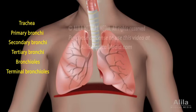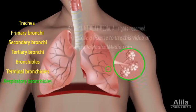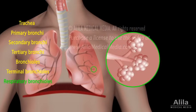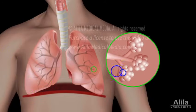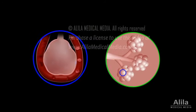The last component of the conducting division, the terminal bronchioles, branch into several respiratory bronchioles, which mark the beginning of the respiratory division. The respiratory bronchioles end with microscopic air sacs called the alveoli, each of which is surrounded by blood capillaries.